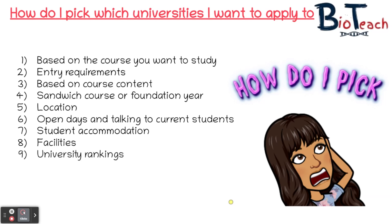Another thing to look at is university rankings, though this may or may not be relevant for you — it's really down to personal choice. Some universities rank really high on the tables but the student experience isn't always positive, so take this into consideration. I wouldn't put too much weight behind university rankings; it all depends on what's important to you. Finally, look at course accreditation. An accredited course is one that's been approved by a professional body — for example, an accountancy degree may be accredited by the Institute of Chartered Accountants or the ACCA. Not all degree courses are accredited, but if there's a professional qualification in the industry you plan to work in, you'd need to check whether your course needs to be accredited.